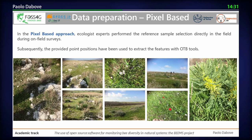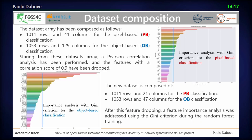The pixel-based approach was made with ecologists to enable comparison. We started with a matrix that was quite large: 41 features for pixel-based and 129 features for object-based. There were too many indicators, so we used Pearson correlation analysis to drop all indicators with a correlation score above 0.9. This reduced the number of features from 41 to 21 for pixel-based, and from 129 to 47 for object-based.